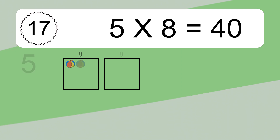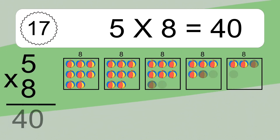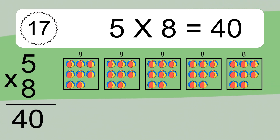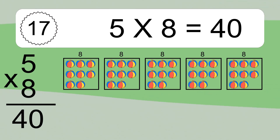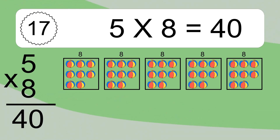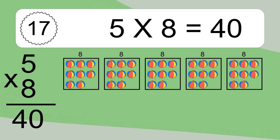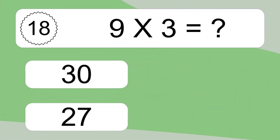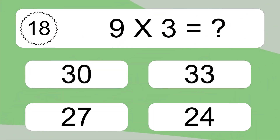5 times 8 equals what? 5 times 8 equals 40. We have 5 boxes, and each box has 8 colorful balls inside. If you count all the balls in all the boxes together, you will have 5 times 8 balls. This equals 40 balls.